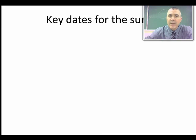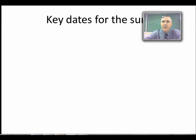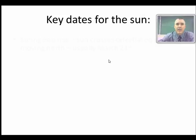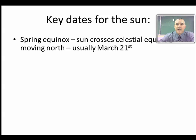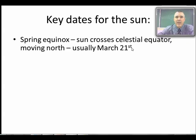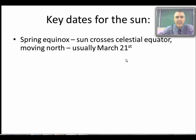There are a few key dates in this whole cycle of where the sun is in the sky. The first is the spring equinox, which occurs when the sun moves across the celestial equator — in other words, its declination is at zero on its way upward — and that is the first day of spring. It's usually March 21st, depending on leap year, time zone, and so on.